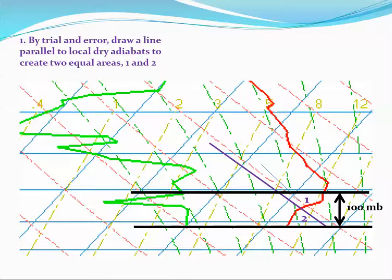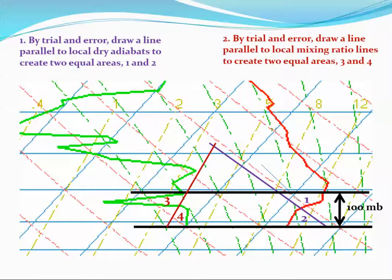Again, by trial and error to do the layer mean mixing ratio, we have to create two equal areas, and here I've marked them 3 and 4. You have to draw a mixing ratio line that's parallel to the local mixing ratio lines to create your two areas.